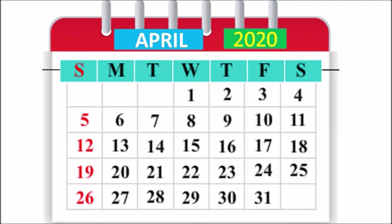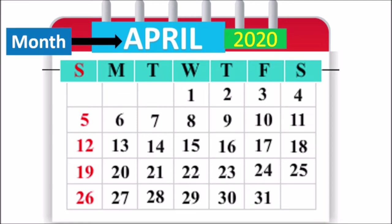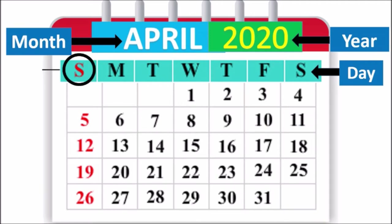Children, this is a calendar. A calendar tells us the month. The month is April. A calendar tells us the year. The year is 2020. A calendar also tells us the day of the week. Do you see the circle? Yes, this circle is around S. S tells us Sunday.